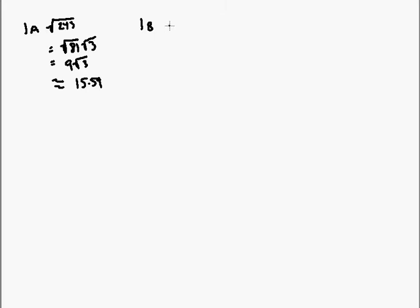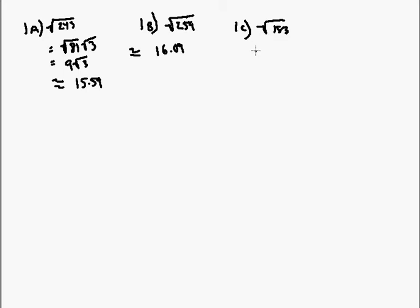1b: the square root of 259. That can't be broken down anymore, so that is approximately equal to 16.09. 1c: the square root of 183. That can't be broken down anymore, so that's approximately 13.53.